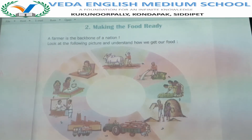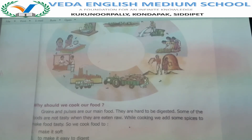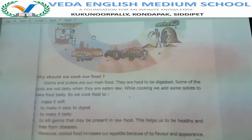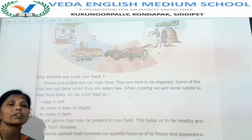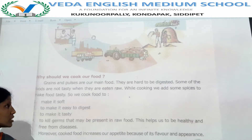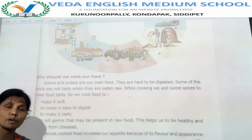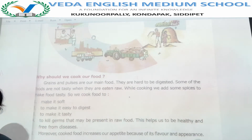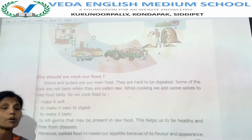So why should we cook our food? Grains and pulses are our main foods. The grains are: rice, wheat, maize, sorghum, jowar, and ragi. And pulses include: pea, beans, red gram, green gram, black gram, and bengal gram. These are our main foods.